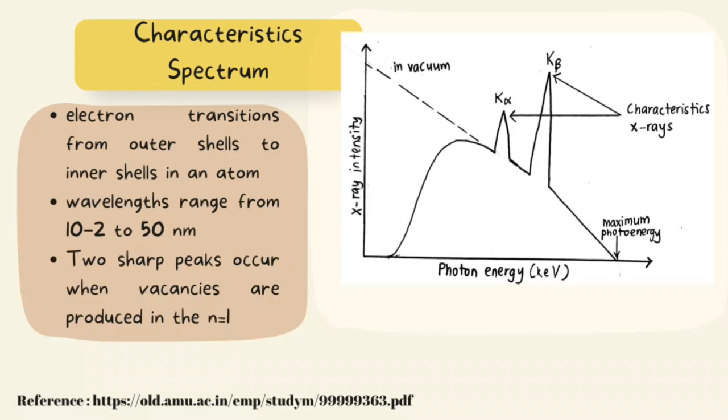Two sharp peaks in the illustration occur when vacancies are produced in the N equals 1 shell. The X-rays produced by transitions from the N equals 2 to N equals 1 levels are called K-alpha X-rays, and those for the N equals 3 to N equals 1 transition are called K-beta X-rays.